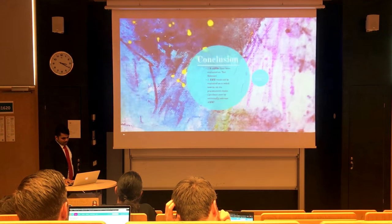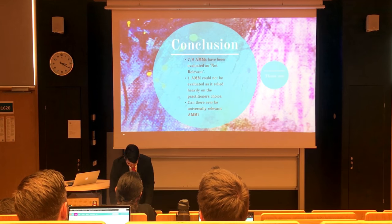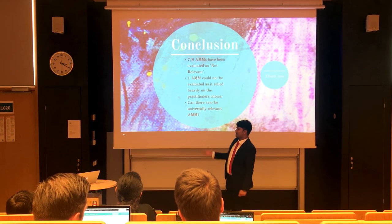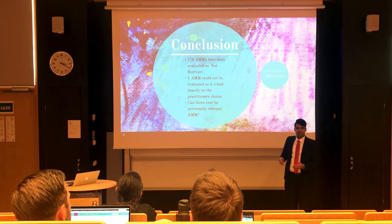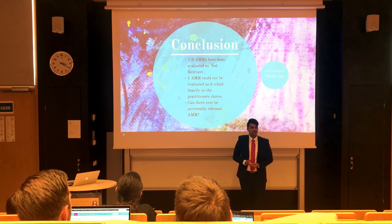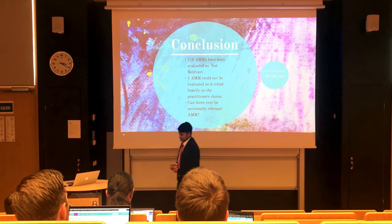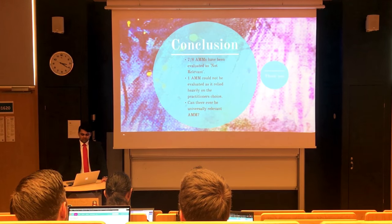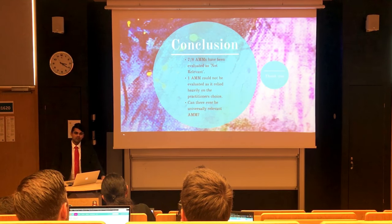I analyzed the relevance of agile maturity models across eight models. Seven of them were evaluated as not relevant. One model suggested so few practices and said practitioners need to make their own choices — I can't speak for the team on that, so it couldn't be evaluated using this method. Now, can there ever be a universal, relevant agile maturity model? What I checked is for this one team, but teams have context-specific needs, and by definition, context-specific needs cannot be universal — it's a contradiction.